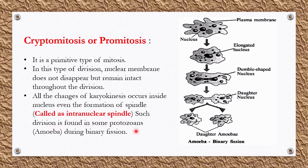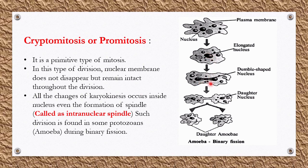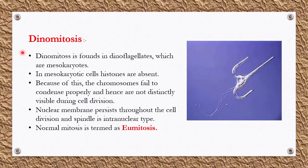This type of division is found in some protozoans; a well-known example is amoeba. During binary fission — one kind of asexual reproduction observed in amoeba — the nucleus first elongates, then becomes dumbbell-shaped, starts dividing, and finally divides into two, completing karyokinesis. Two daughter amoeba cells are observed. Binary fission is thus an example of cryptomitosis.